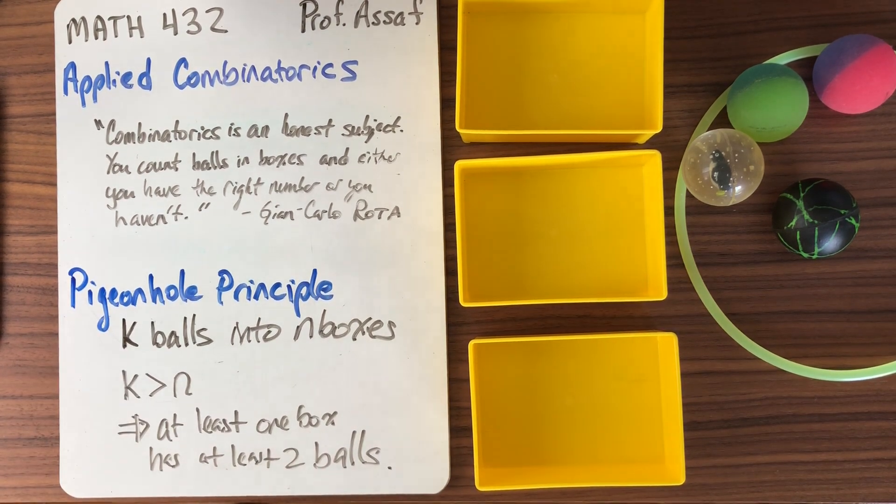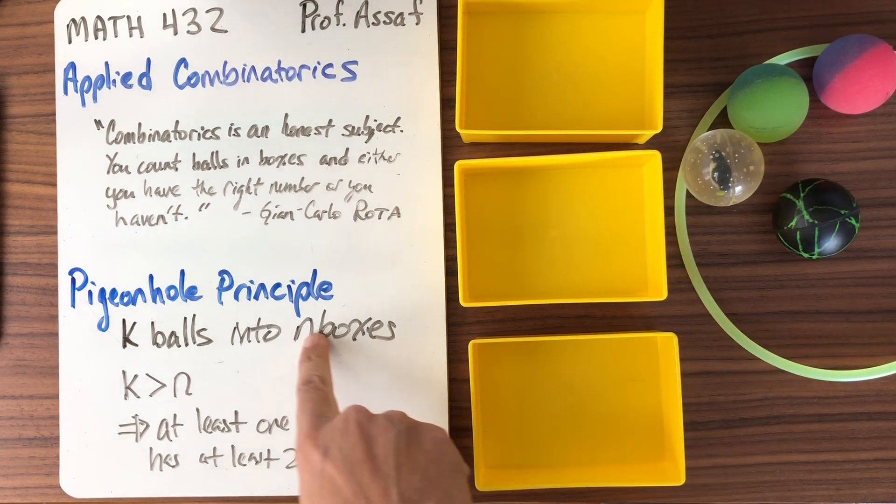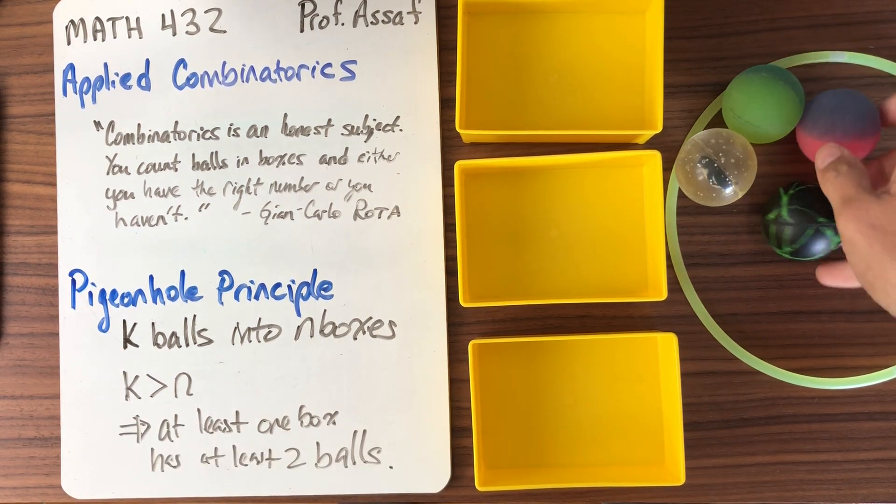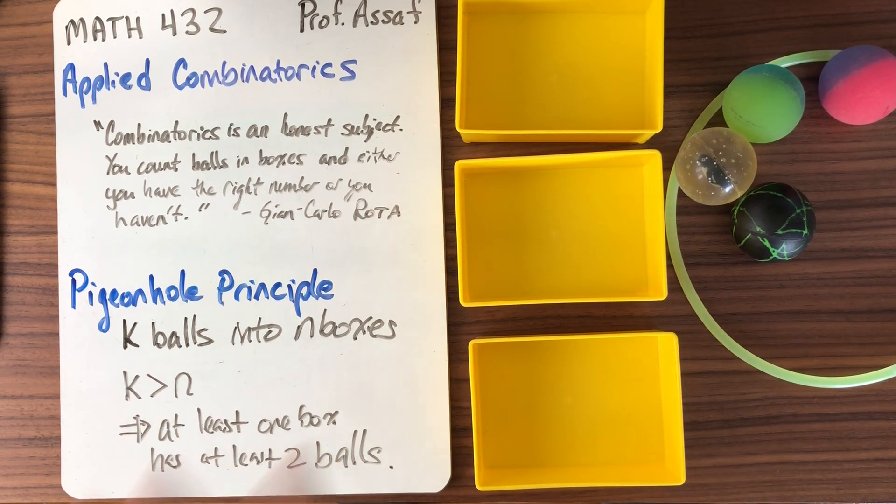So whenever you're faced with a statement like this, maybe it's intuitively obvious. Be careful if it is. A lot of obvious things are false. So let's just do an example. Here we have three boxes. So our n is three. We have four balls. Hopefully you can see them all. So k is four. So we just check, is k bigger than n? Yes.